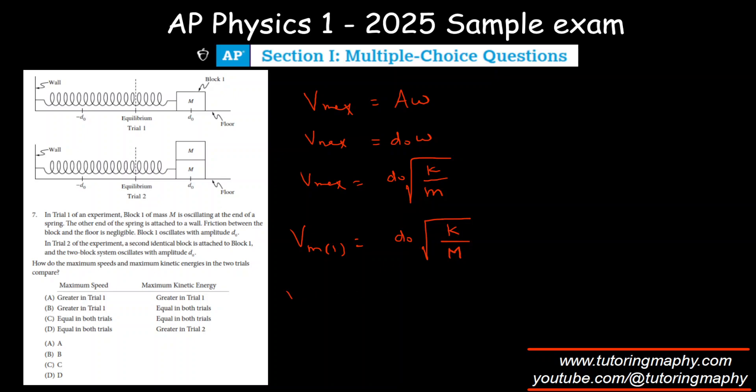And V max in case of Trial 2 is D not times the square root of K over 2M, since the total mass is 2M. So obviously this proves that the maximum speed is definitely greater in Trial 1 because there's a 2 being divided here.